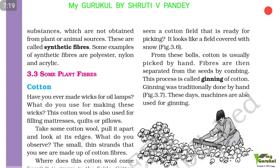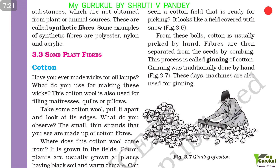From these bolls, cotton is usually picked by hand. The fibers are then separated from the seeds by combing. This process is called ginning of cotton. Ginning was traditionally done by hand; these days machines are also used for ginning.